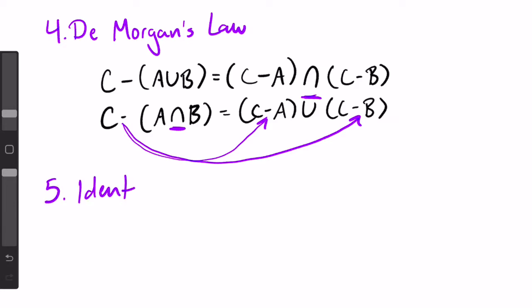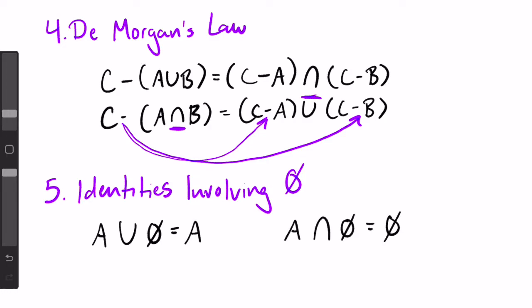And the very last property is just some identities involving the empty set. These are: A union empty set equals A, A intersect empty set equals the empty set, and A intersect (C minus A) is the empty set.